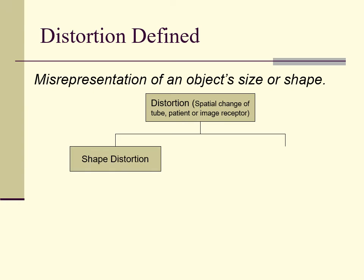Distortion can be subdivided into two major classes, the first being shape distortion. Rectangles projected as squares, circles as ovals, objects elongated or foreshortened, just to name a few.